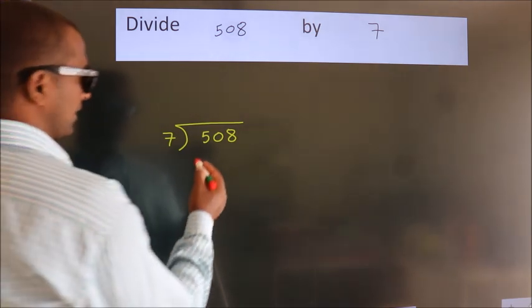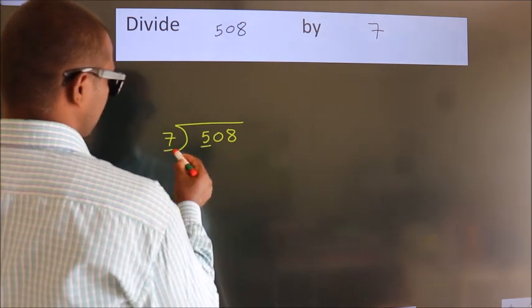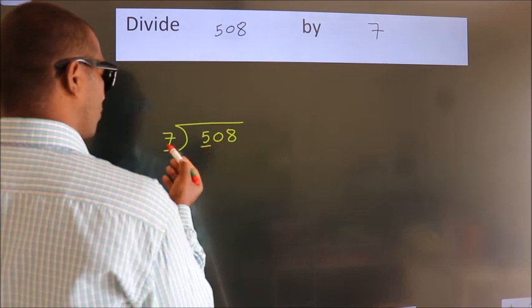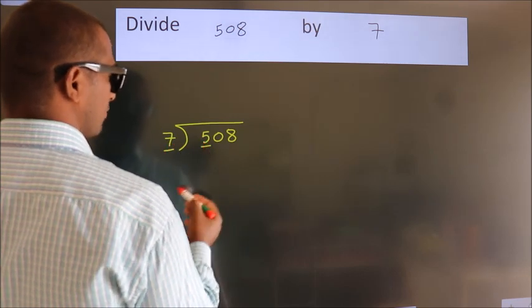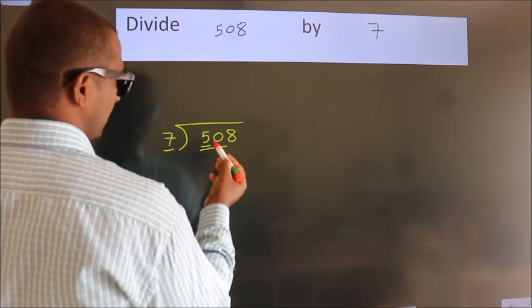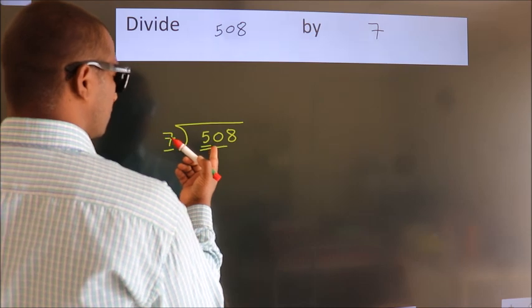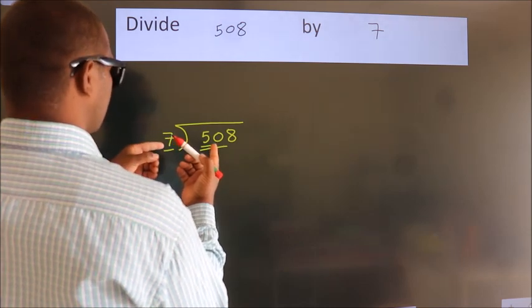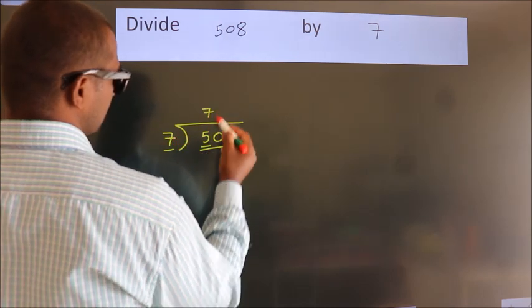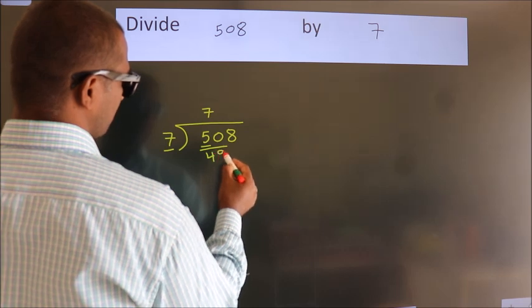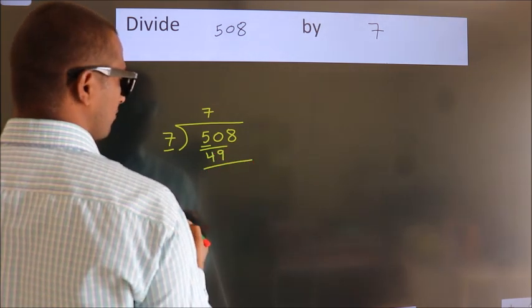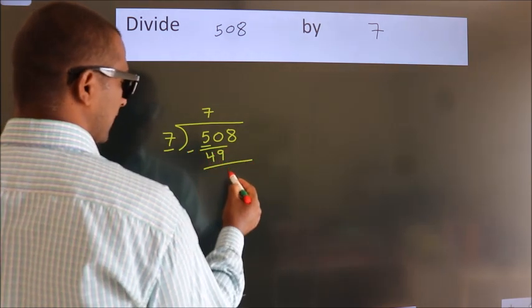Next, here we have 5, here 7. 5 is smaller than 7, so we should take two numbers, 50. A number close to 50 in the 7 table is 7 times 7 equals 49. Now we should subtract. We get 1.